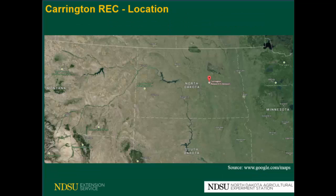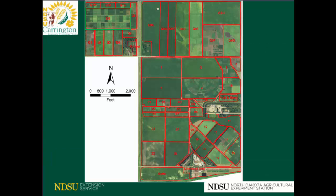Carrington is located in the central east region of North Dakota. The Research Center has around 1,700 acres. This is just a map of all the fields that we have at the Research Center.